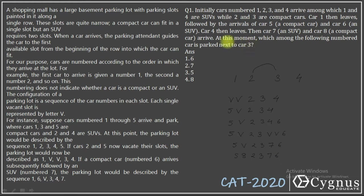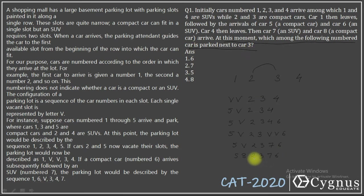Now, what's the question? At this moment, which among the following numbered cars is parked next to car 3? Next to car 3 is car number 2 and car number 7. Car number 2 is not among the options, so I'll mark the second option — car 7. This was a very easy question.